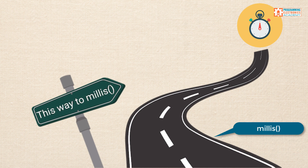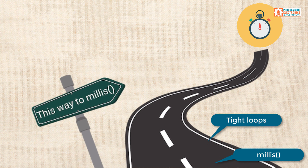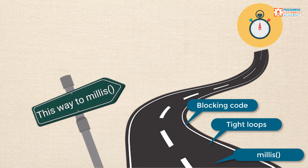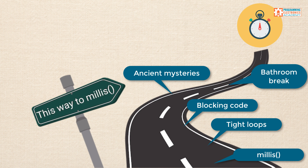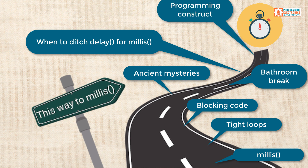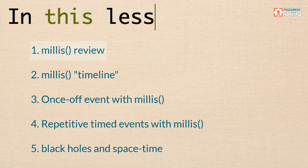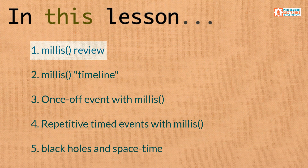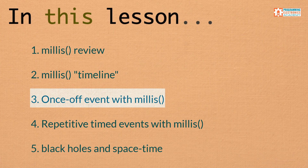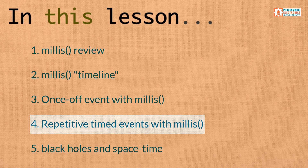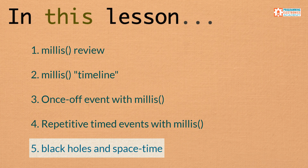Now if you've watched the previous lessons, we've talked about the millis function in general, we've talked about tight loops and blocking code, and some issues that arise when using the delay function. Now I want to talk about how we can use the millis function to create simple timed events. Specifically, we'll cover a quick review of the millis function, the millis timeline, once-off timed events, repetitive timed events, and finally how black holes can alter space-time.